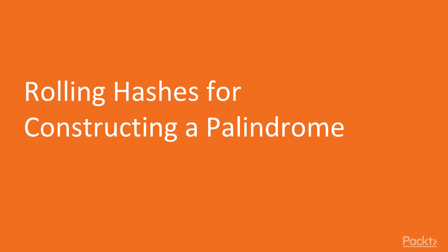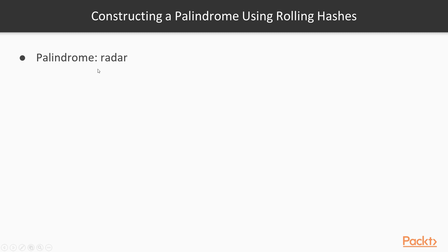In this video we are going to talk about rolling hashes for constructing a palindrome. A palindrome is a string that reads the same forwards as it does backwards. A hash function in our case will simply turn a string input into an integer output — it's a bit more complex than that in general, but that's all we need to know for understanding this video.